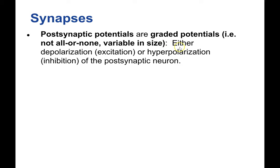Unlike the action potential, they can go in two different directions. They can either be a depolarization, bringing up the membrane potential toward the threshold of excitation, which gives you an action potential, or the post-synaptic potential can be a hyperpolarization. This is inhibition. This takes the membrane potential further from zero, hyperpolarizes the cell, and pushes it further from the threshold, making action potentials less likely.